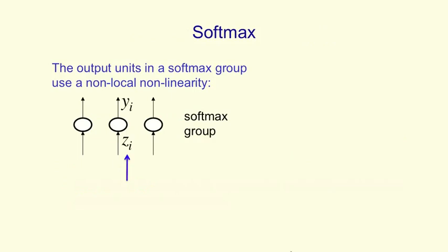The way the units in a softmax group work is that they each receive some total input that they've accumulated from the layer below. That's zi for the ith unit, and that's called the logit. And then they give an output yi that doesn't just depend on their own zi. It depends on the z's accumulated by their rivals as well.